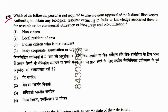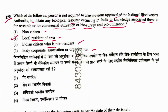Question 120: Which person is not required to take prior approval of the National Biodiversity Authority to obtain biological resources occurring in India for research, commercial utilization, or bio-survey? Non-citizens — need approval. Indian citizens who are non-residents — need approval. Body corporate — need approval. Local residents of the area — do not need approval. Answer is 2. This is under Section 3 of the Biological Diversity Act 2002.